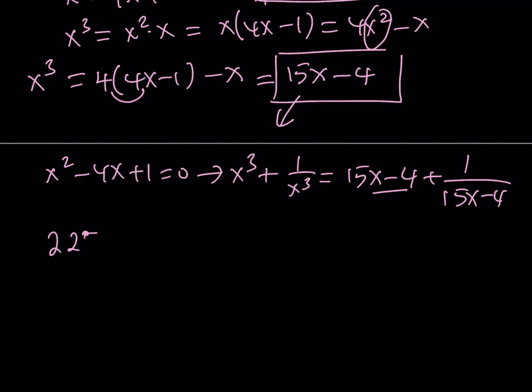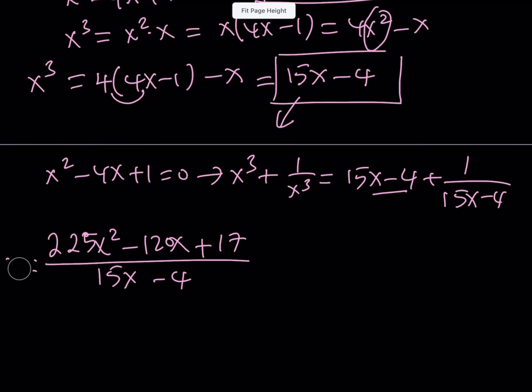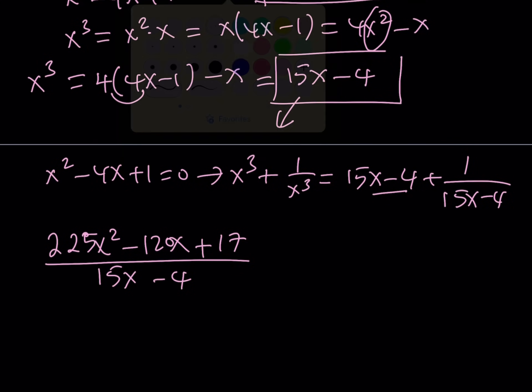You're going to get 225x squared minus 120x plus 16, of course plus 1, plus 17. And now we're going to divide it by 15x minus 4. Again, this is x cubed. Remember that. I'm sorry - it's x cubed plus 1 over x cubed, not just x cubed. But it's this. Okay? Great. So this is what we're talking about, right?